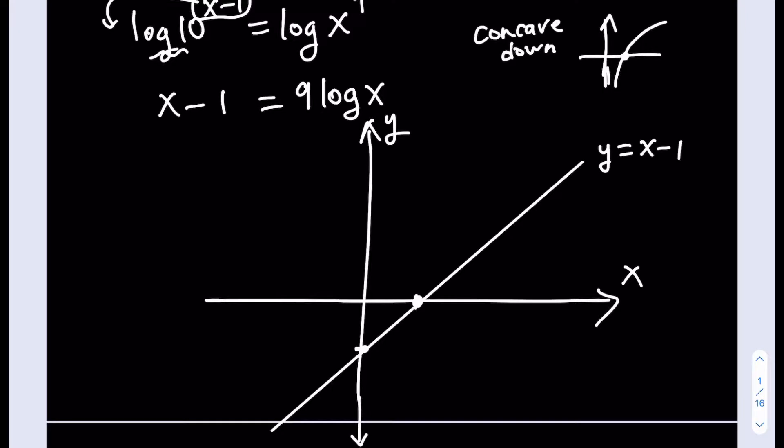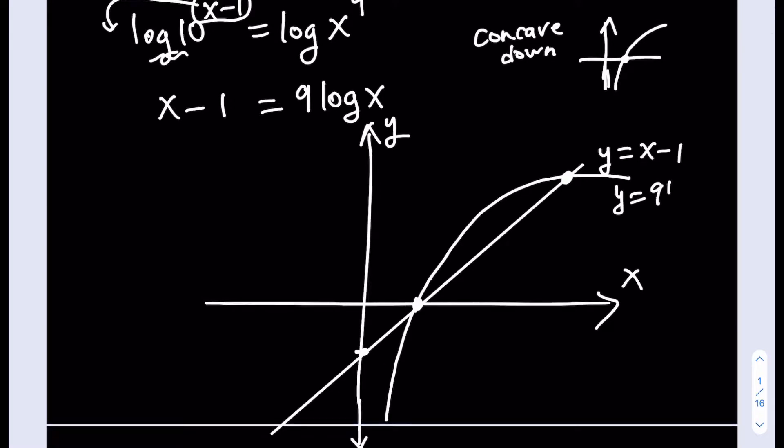Now how does that help us? Well, first of all, we do know that our graph is going to go through 1, 0. So it's going to go like this. And then since it's concave down, it's actually going to curve like this. And then at some point, it's going to hit the graph of y equals x minus 1. So this is the graph of y equals 9 log x. So basically, one of them is a straight line. The other one is a function that's concave down. That means that they're going to intersect at two points. And we can actually easily find those points, and those are going to be the solutions.